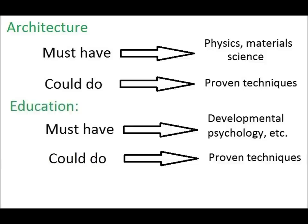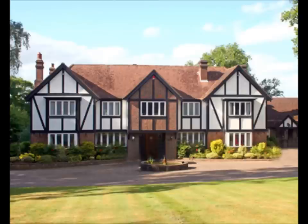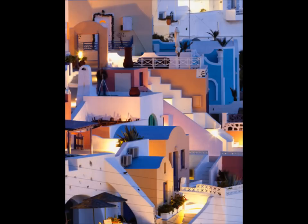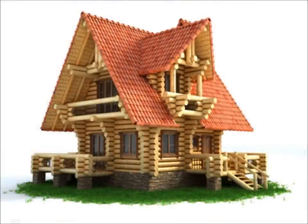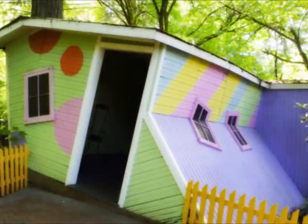But notice the must-haves and the could-dos don't tell you what the house is going to look like. The must-haves are boundary conditions within which there's a huge amount of room for variation. And the could-dos are tools that you could use to help you get there, but you don't have to use them if you don't want to, as long as you respect the must-haves.